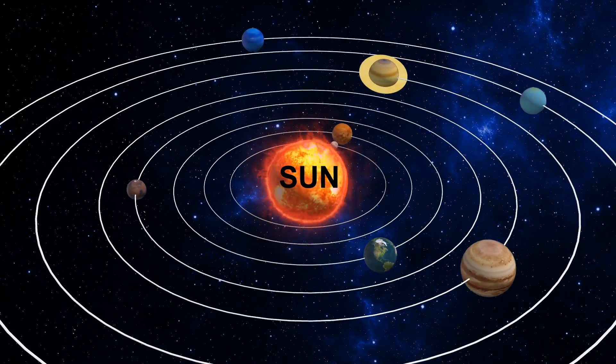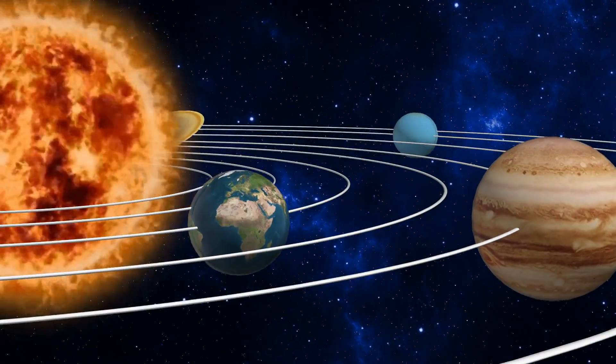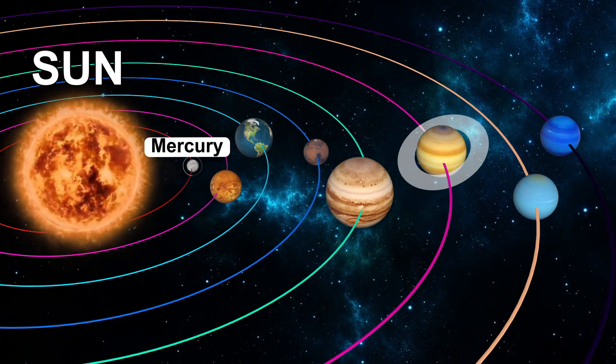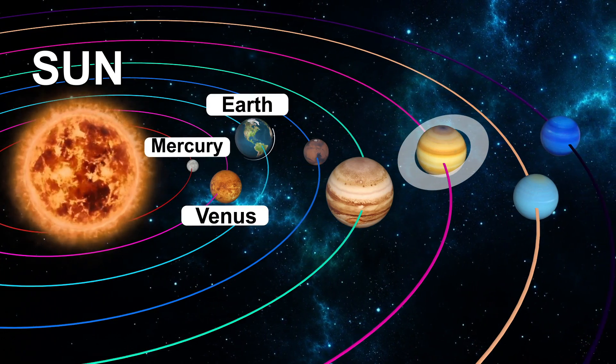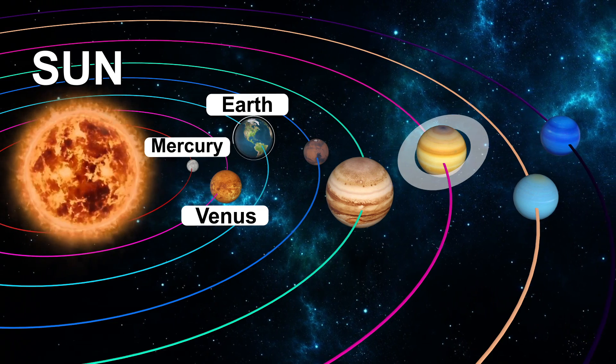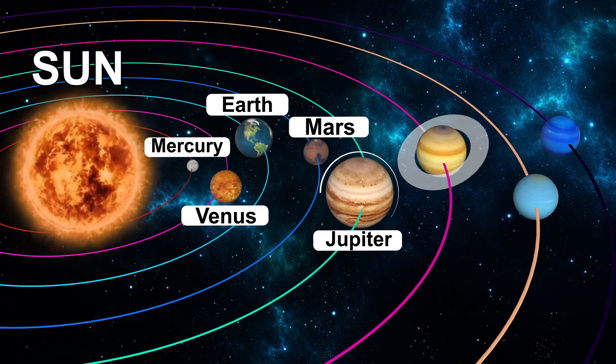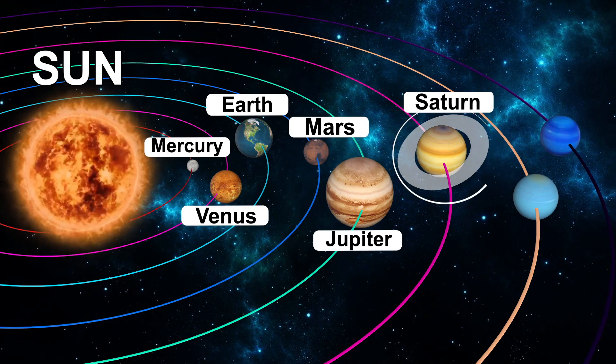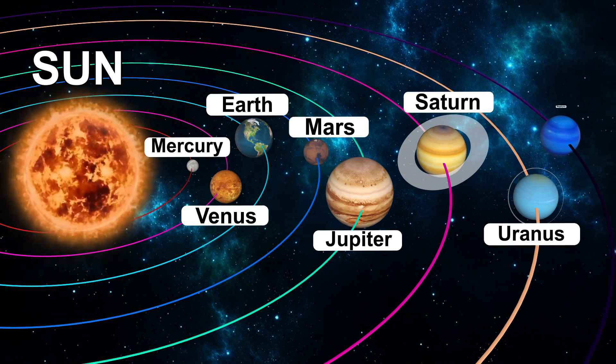There are 8 planets in Solar System: Mercury, Venus, Earth, Mars, Jupiter, Saturn, Uranus, Neptune.